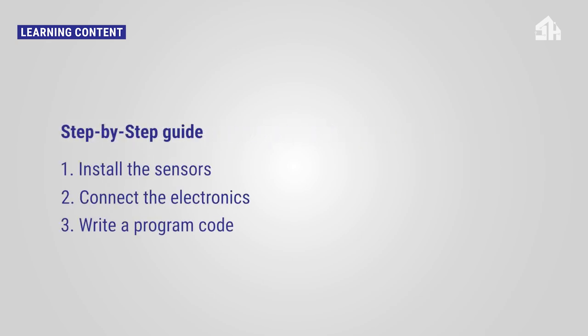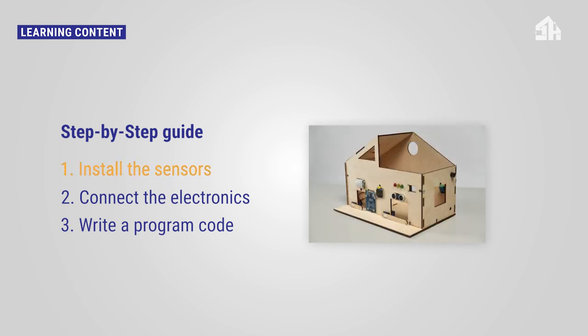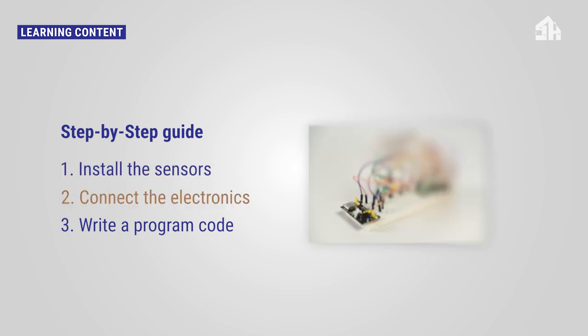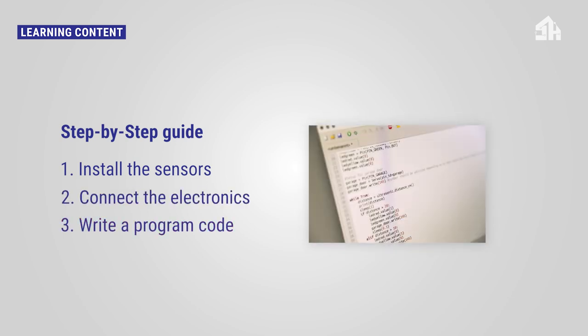At least three installation steps are required for installing and controlling a security system using the before-mentioned sensors. First, install the sensors. Secondly, connect the electronics. Thirdly, write a program code.